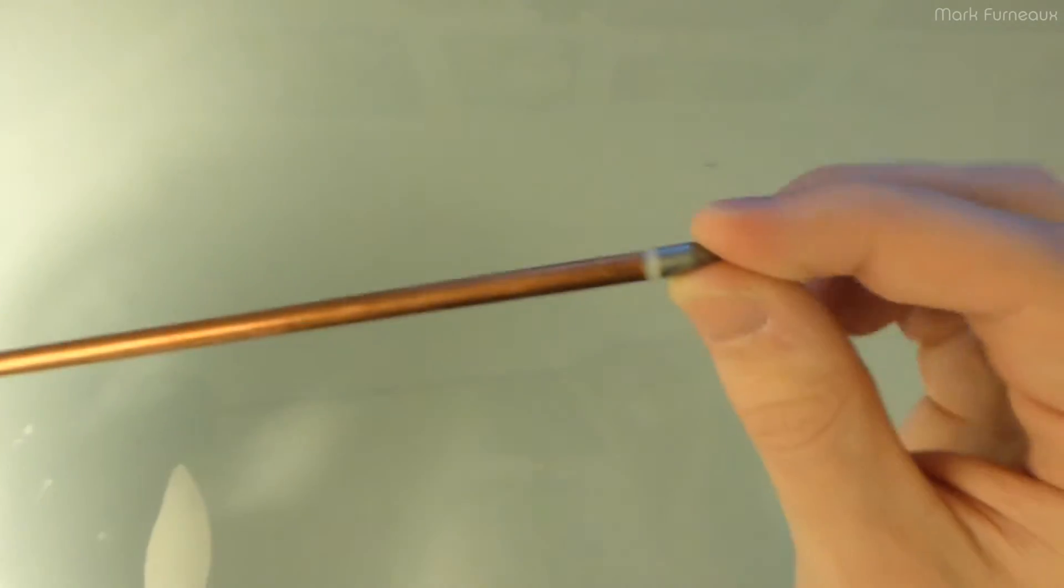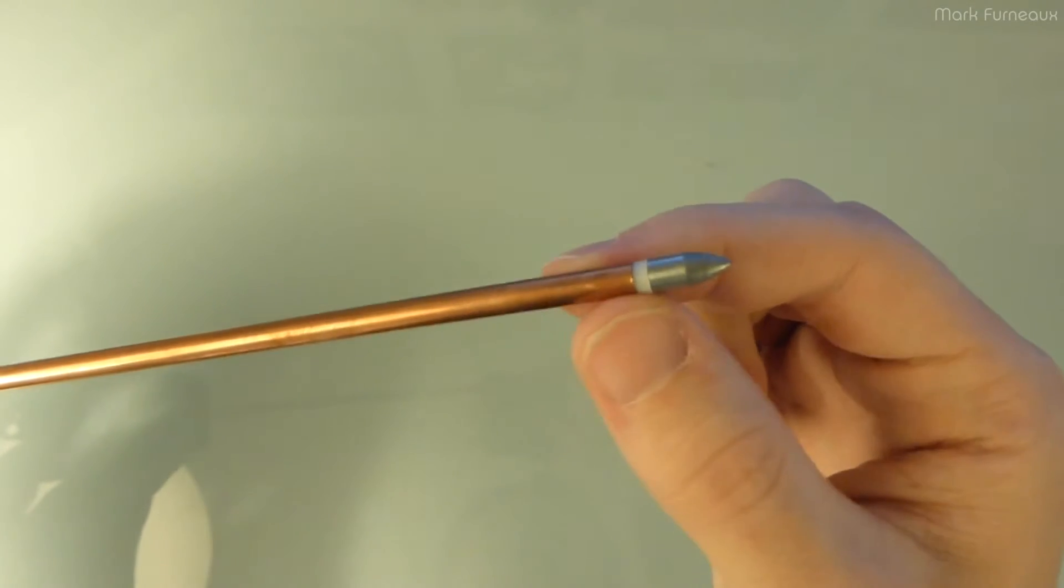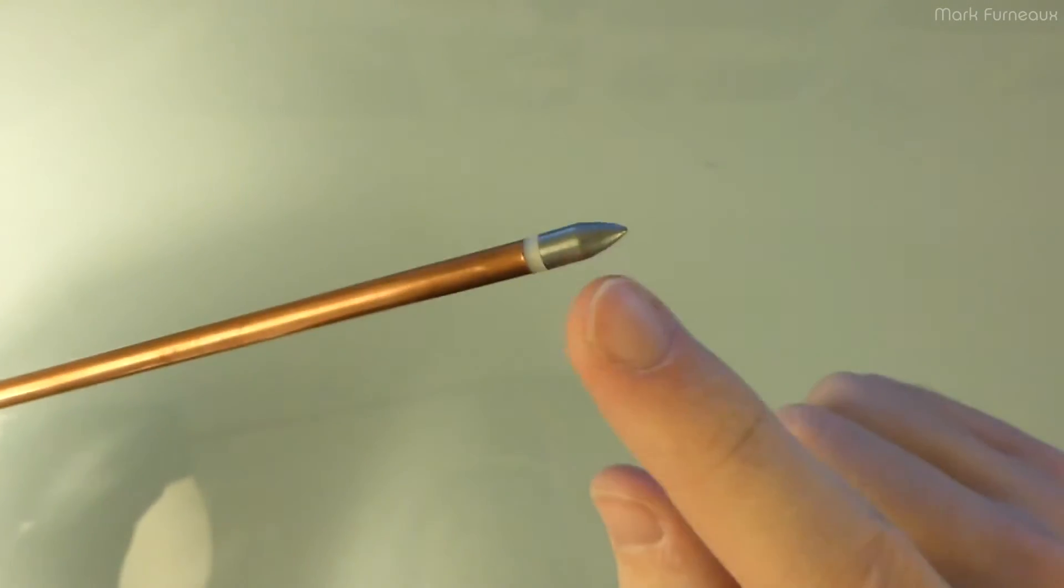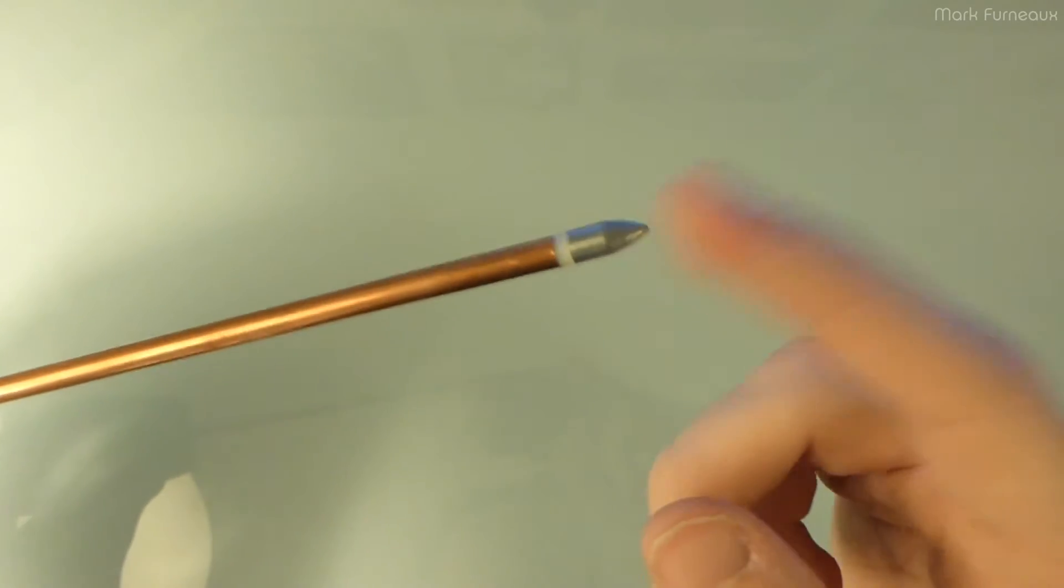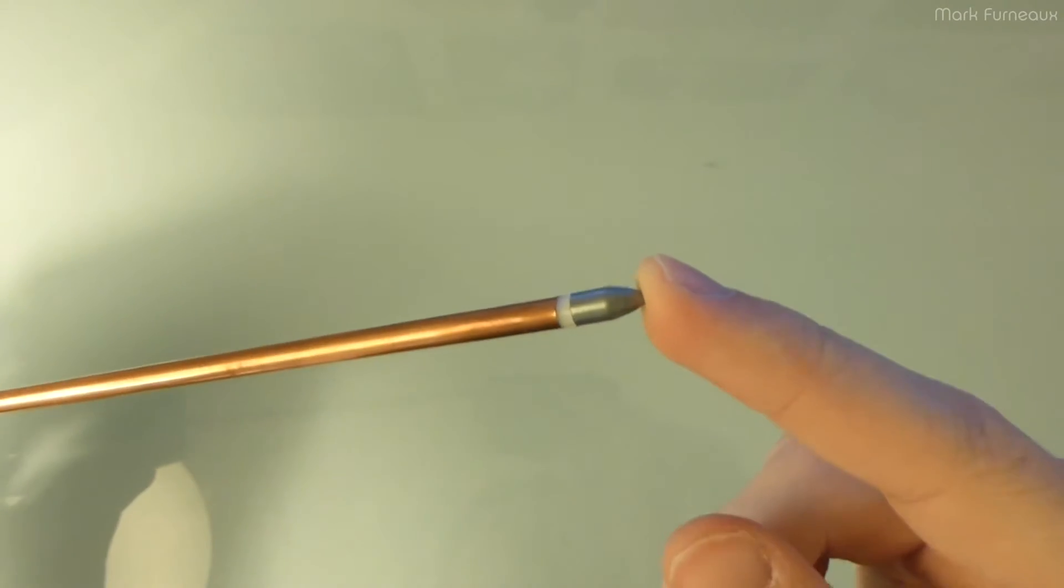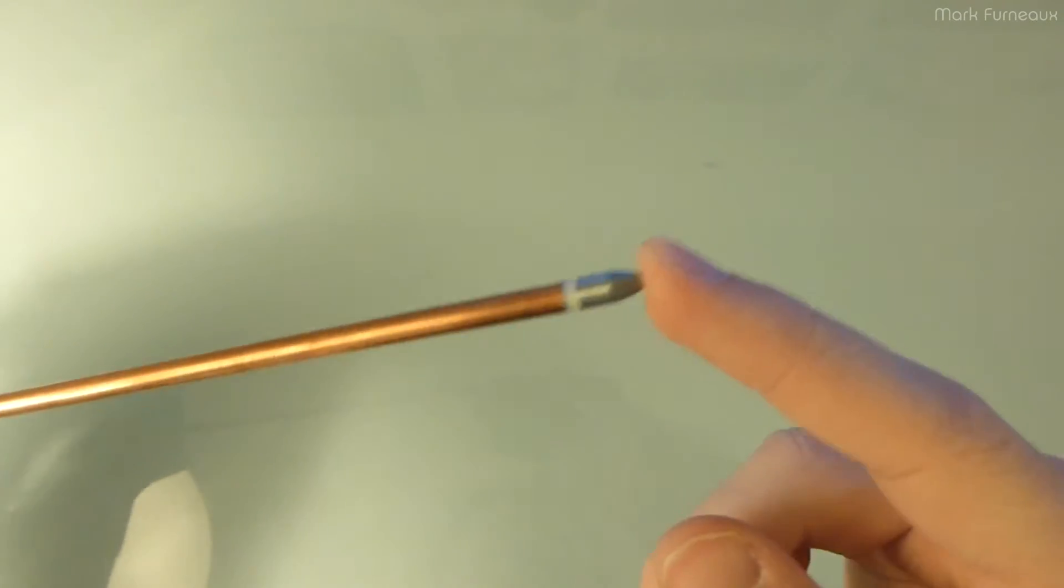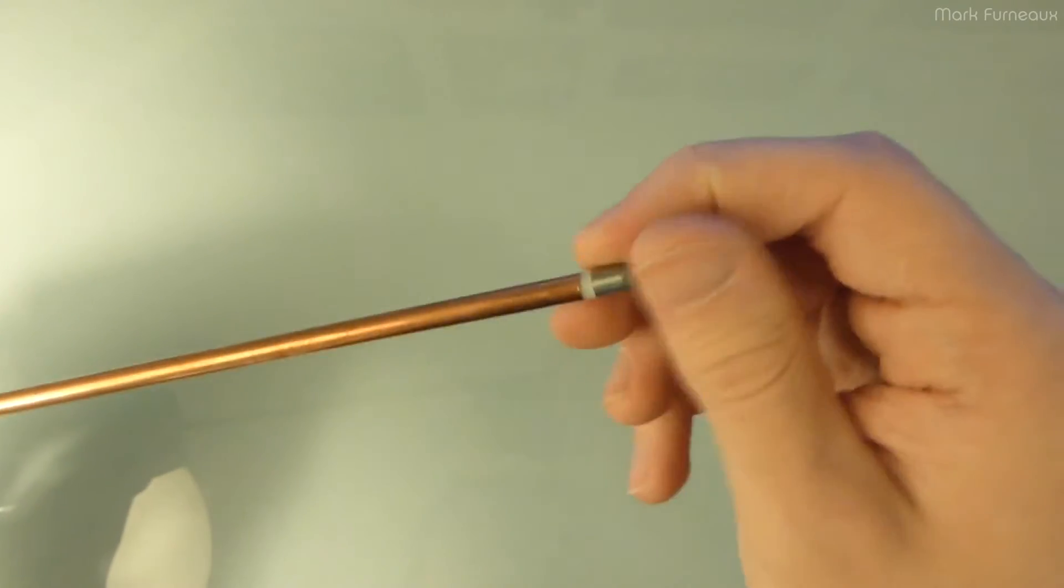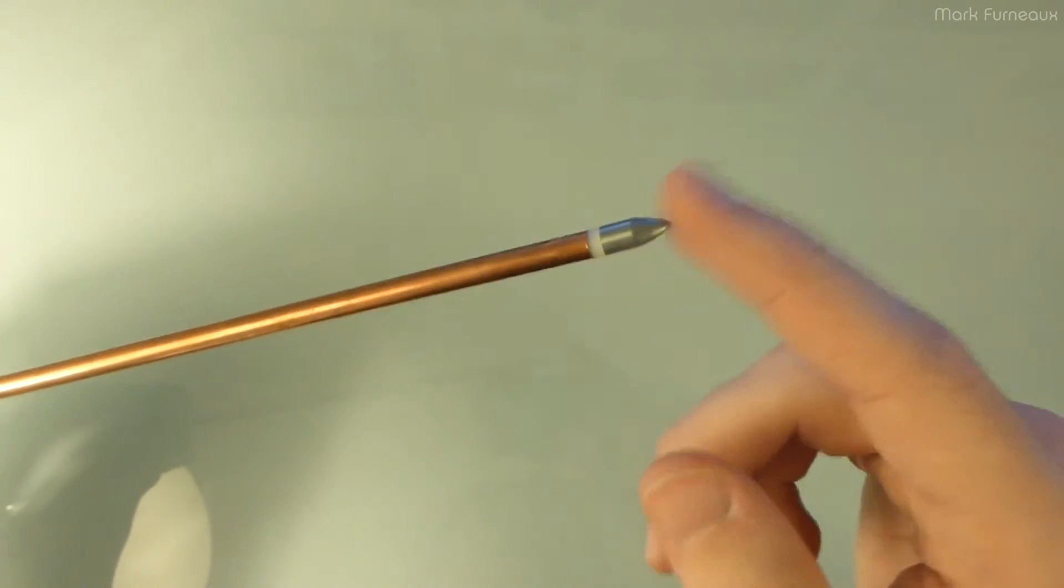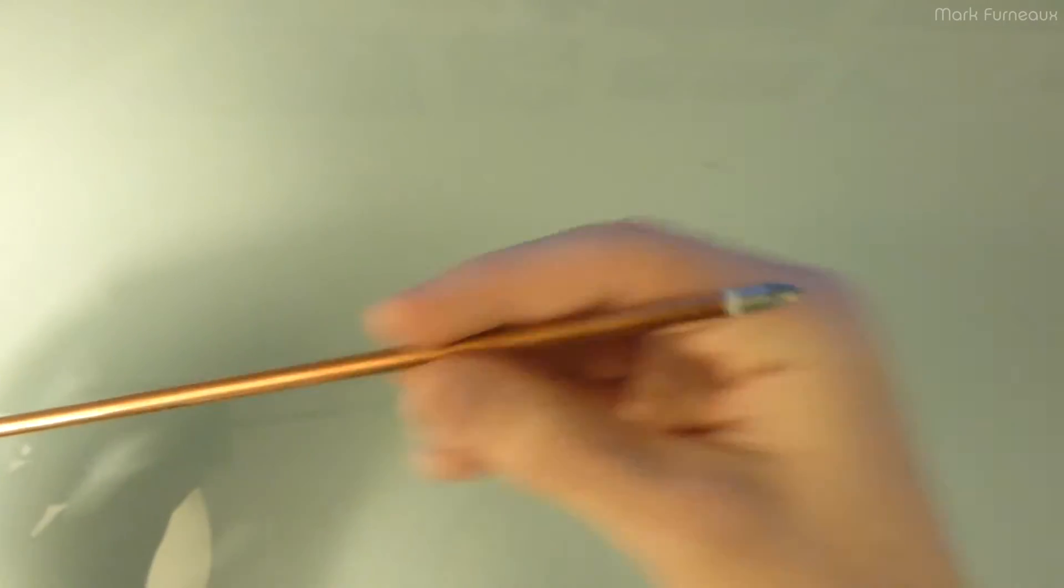A copper rod here, and then there's a plastic insulator, this white piece, and then there's this metal tip which is a different metal. My guess is this is probably zinc, but I have no way of verifying. Maybe someone who knows could leave that in the comments, but my best guess is it's zinc. Basically, this creates a battery, so once you insert this into wet soil...